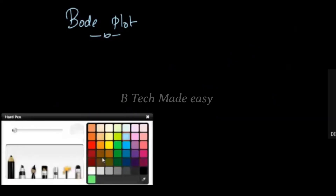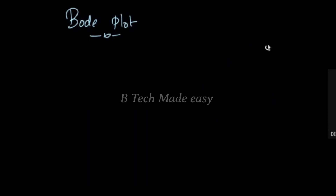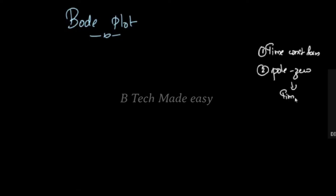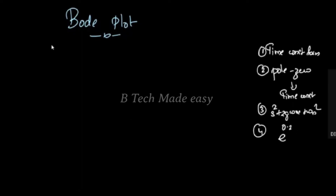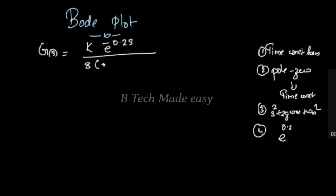In summary, the first case is the direct time constant form. The second case is the pole-zero format. The third case is the second order system: s² + 2ζωₙs + ωₙ². The last case is the transport delay term: e^(−0.2s). That is the next discussion, where G(s)H(s) = K·e^(−0.2s) / [s(2 + s)(8 + s)].